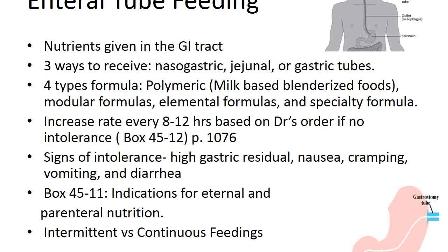The PEG tube — percutaneous enteral G-tube — is passed into the patient's stomach through the abdominal wall, most commonly to provide a means of feeding when oral intake is not adequate. The jejunal tube is extended into the small intestine by passing a jejunal extension tube (PEG-J tube) through the PEG tube and into the jejunum. The PEG-J is the preferred method if the patient is at high risk for gastric reflux. There are several different formulas utilized in internal tube feedings.